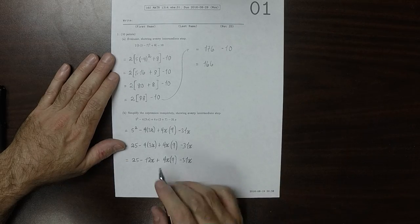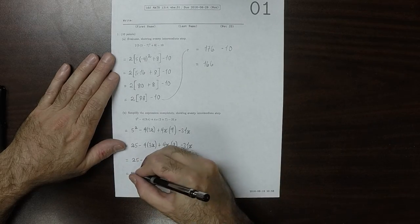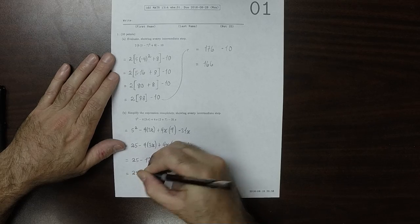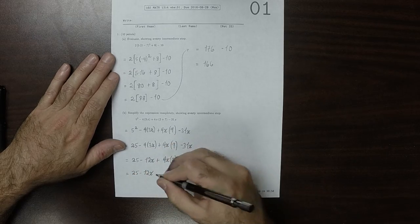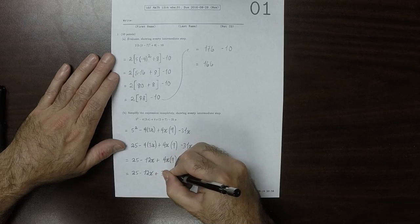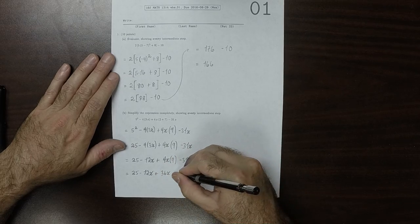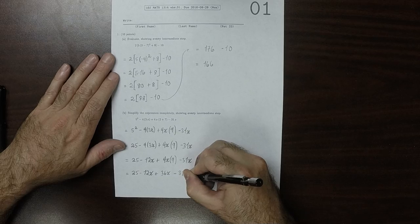So now this is the next one. 25 minus 12x plus 36x minus 31x.